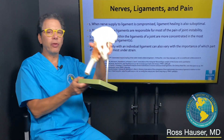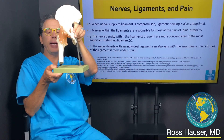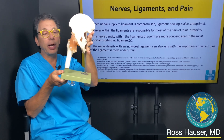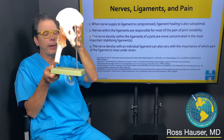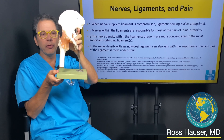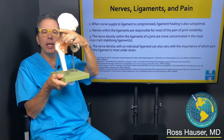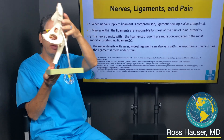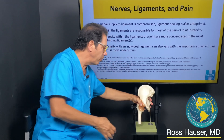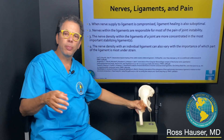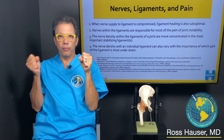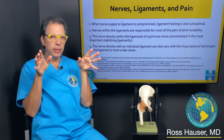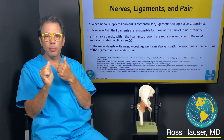All the joints basically are surrounded by ligaments. This is one of my original models that I got from Dr. Hemwell, so this is probably 40 years old. You can see all these ligaments that surround the hip joint. Ligaments are supposed to be like ropes — they're very, very tight. So the nerve endings in the ligaments are not supposed to stretch much.